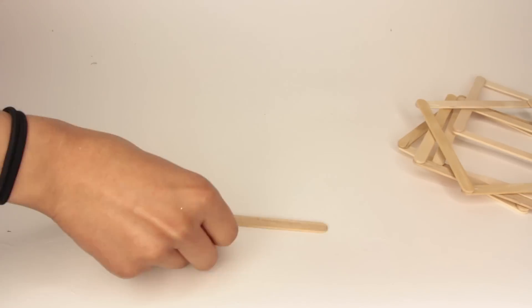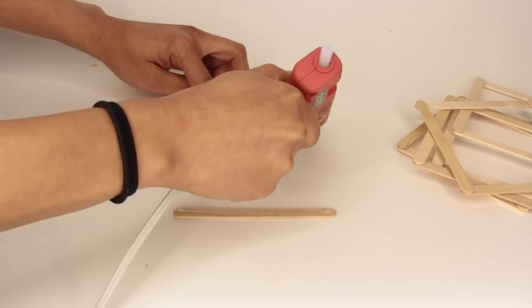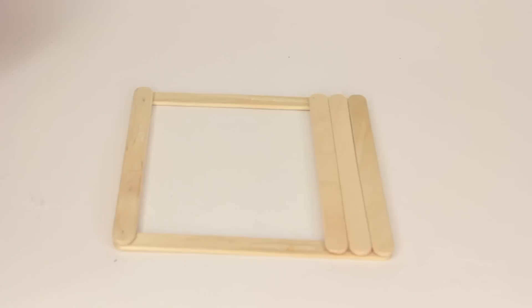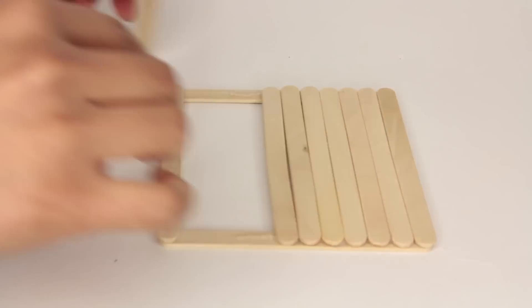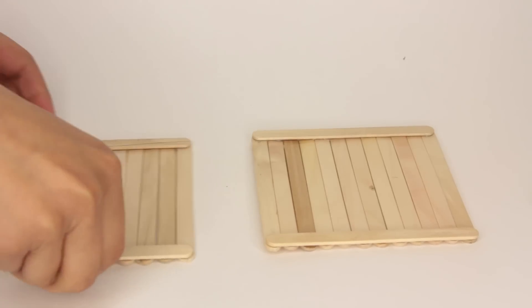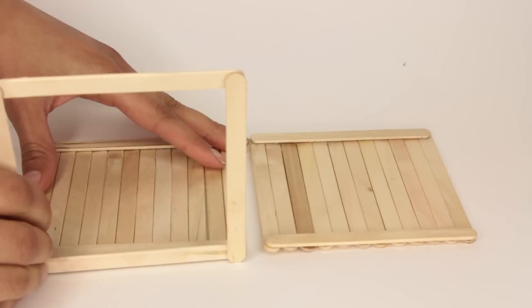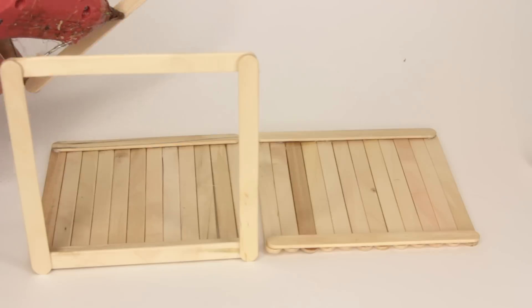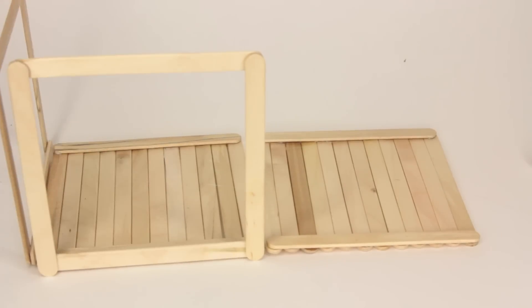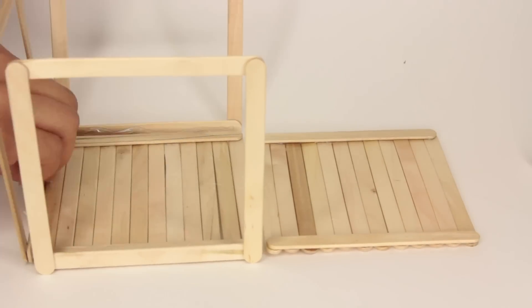To nine of the squares, you want to lay craft sticks across them. This will be your base, second shelf, backing, and top of the cube. What you'll do is take one of the squares fully covered in craft sticks and glue on three of the plain squares to the front, left, and right side. To the back and top of the cube, you'll glue on the squares covered in craft sticks.